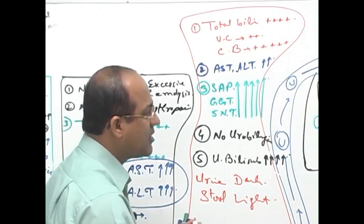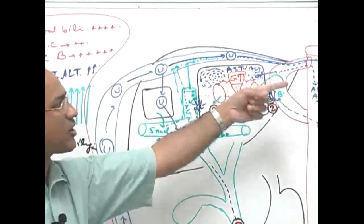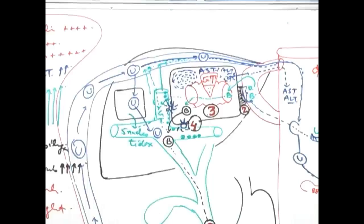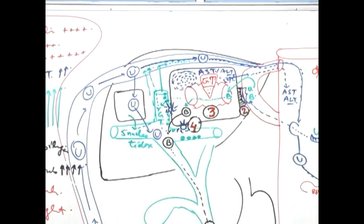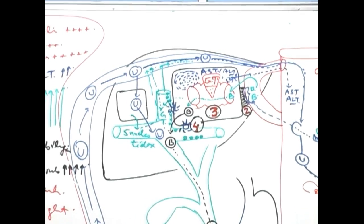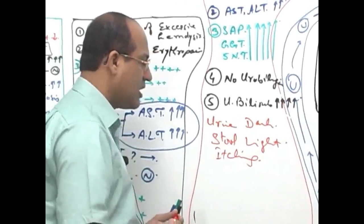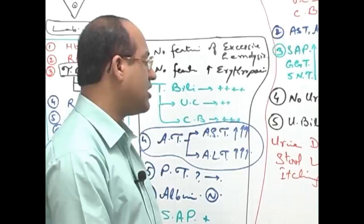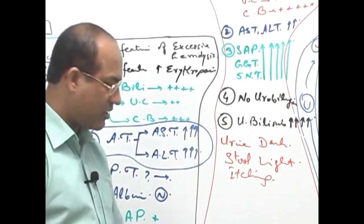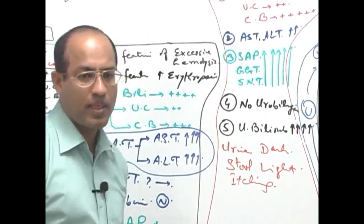With that, because there is cholestasis, bile acids also go to the circulation and bile salts and they produce severe itching, so there is lot of excoriations or itching. So when you see a patient with itching and dark colored urine and light colored stool, it is definitely a case of cholestasis.